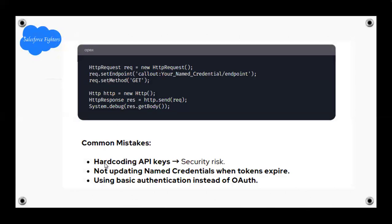Common mistakes: hard-coding API keys — this is a security risk. Not updating Named Credentials when tokens expire. Using Basic Authorization instead of OAuth.